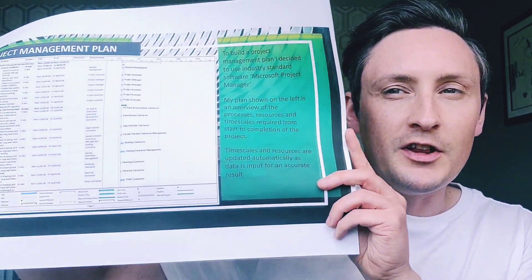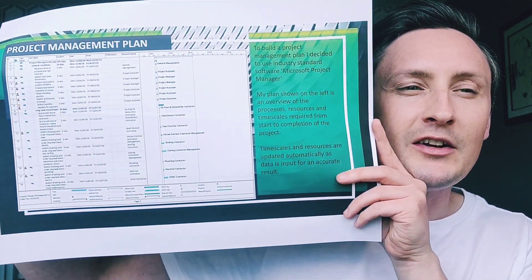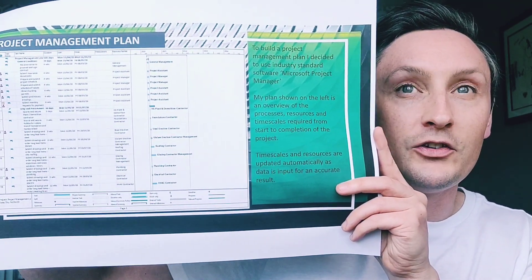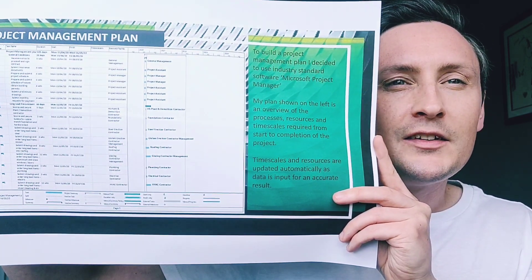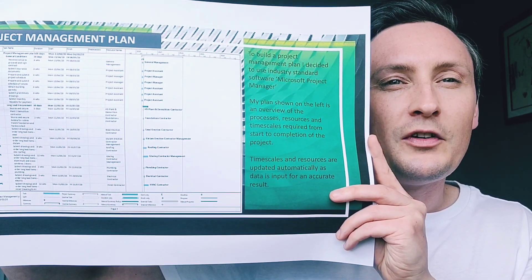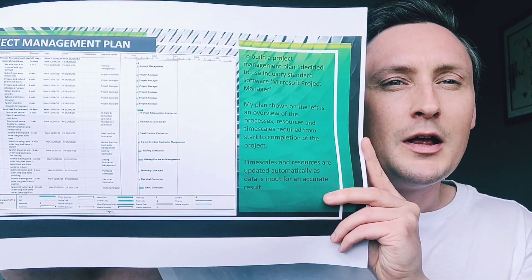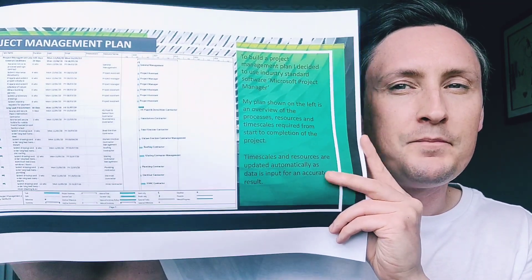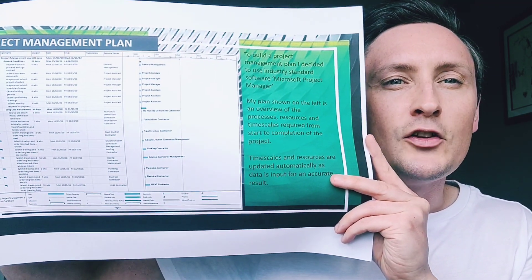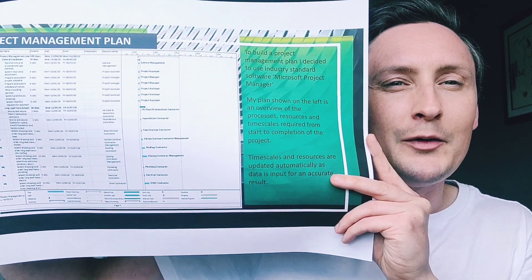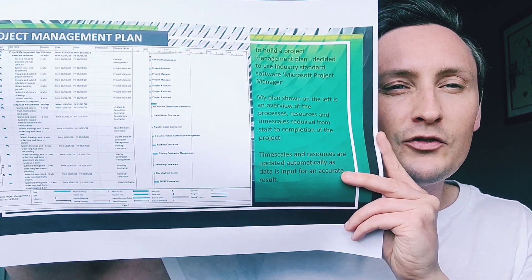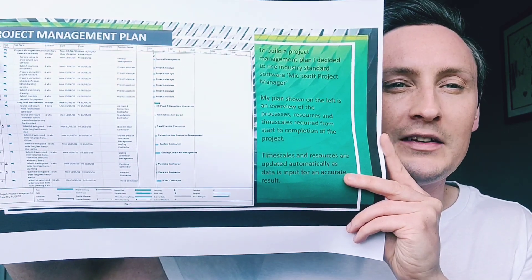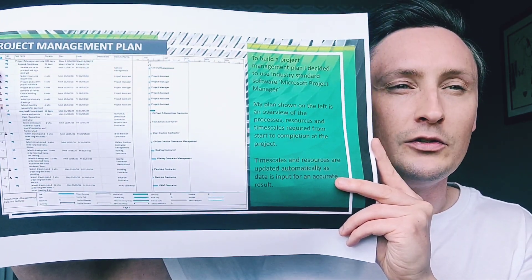With that information, I then moved on to producing a project plan using industry standard software such as Microsoft Project Manager. My plan shown here is an overview of the process, resources and timescales required from start to completion of the project. Timescales and resources are updated automatically as data is input, giving an accurate result.